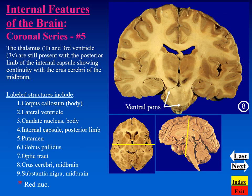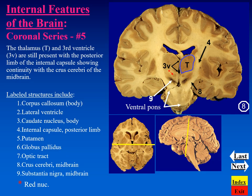Continuing posteriorly on our tour of these coronal sections, we see that the third ventricle is still an obvious structure, and its lateral wall — the prominent gray matter mass — is the thalamus of the diencephalon. The medial border is, of course, the posterior limb of the internal capsule. That posterior limb contains axons that travel through the crus cerebri of the midbrain, labeled here. Two other features that are part of the midbrain are also obvious in this section: the red nucleus and the substantia nigra.